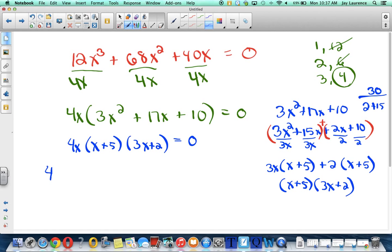That's supposed to equal 0. So now I take each piece. 4x, set it equal to 0. x plus 5, set it equal to 0. So 3x plus 2, set it equal to 0. And I'm going to solve for x. So x is going to equal 0.